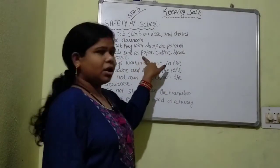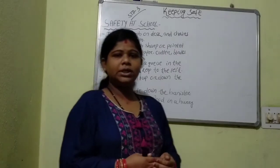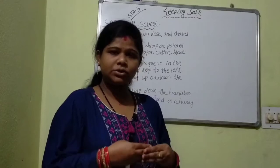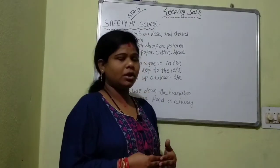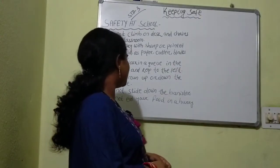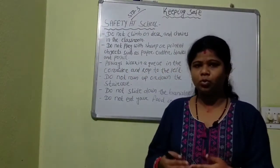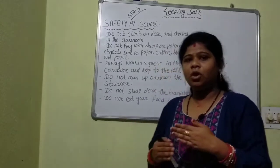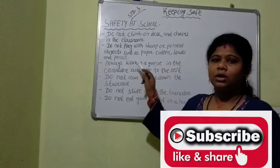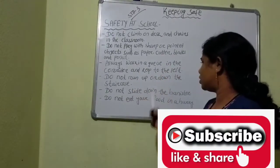In school, you use a paper cutter, blade, and pencil — use them very carefully. If you use them carelessly, you may hurt your hand or any other body part. Always walk in a queue in the corridor and keep to the left. While walking in the school or on the playground, always walk on the left side.